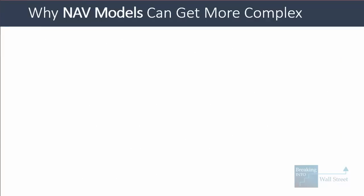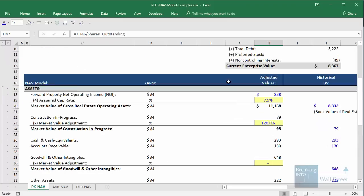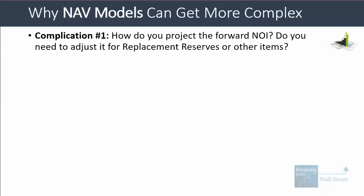That's the basic idea behind a NAV model. Now let's get into the reasons why they can get more complex. The first problem is how do you project the forward NOI, and do you need to adjust it for replacement reserves, non-cash items, acquisitions, dispositions in the quarter? Here, we glossed over it because we had the number from another operating model with segment-by-segment projections, but you'd have to really think about how to get that number in real life.